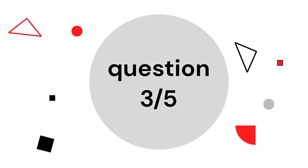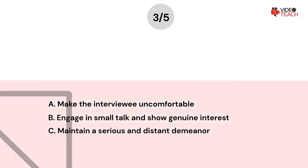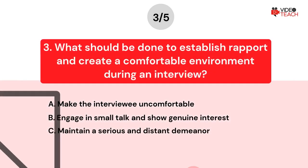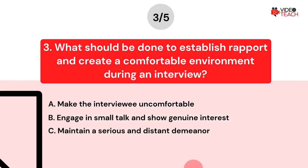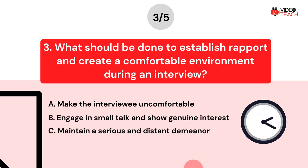Question number three. What should be done to establish rapport and create a comfortable environment during an interview? Option A: Make the interviewee uncomfortable. Option B: Engage in small talk and show genuine interest. Option C: Maintain a serious and distant demeanor. Now you have about 15 seconds to think about your answer.